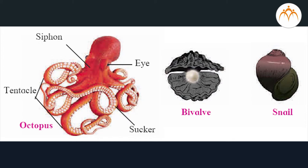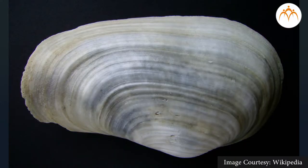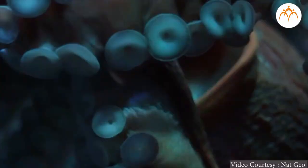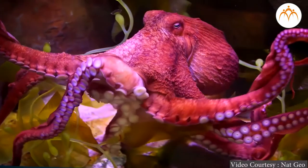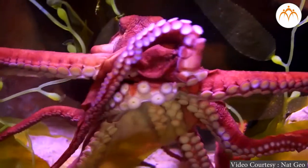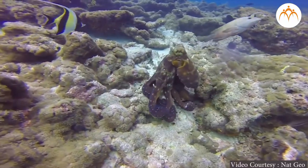The visceral mass is covered with a mantle. This mantle secretes a hard calcareous shell, which may be external, internal, or even absent in some cases. These animals are unisexual. Examples: bivalve, snail, octopus, etc.